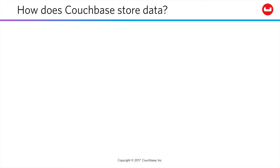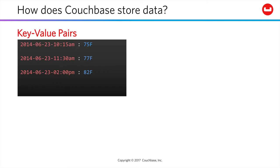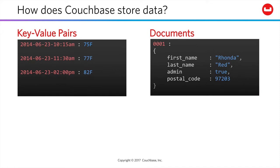At base, Couchbase stores key-value pairs. Those pairs could have a somewhat complex key, like a date timestamp, associated with a simple string value, like a temperature reading. Or the pair could use some arbitrary but unique value as a key, associated with a longer text document in a useful format, such as JSON.